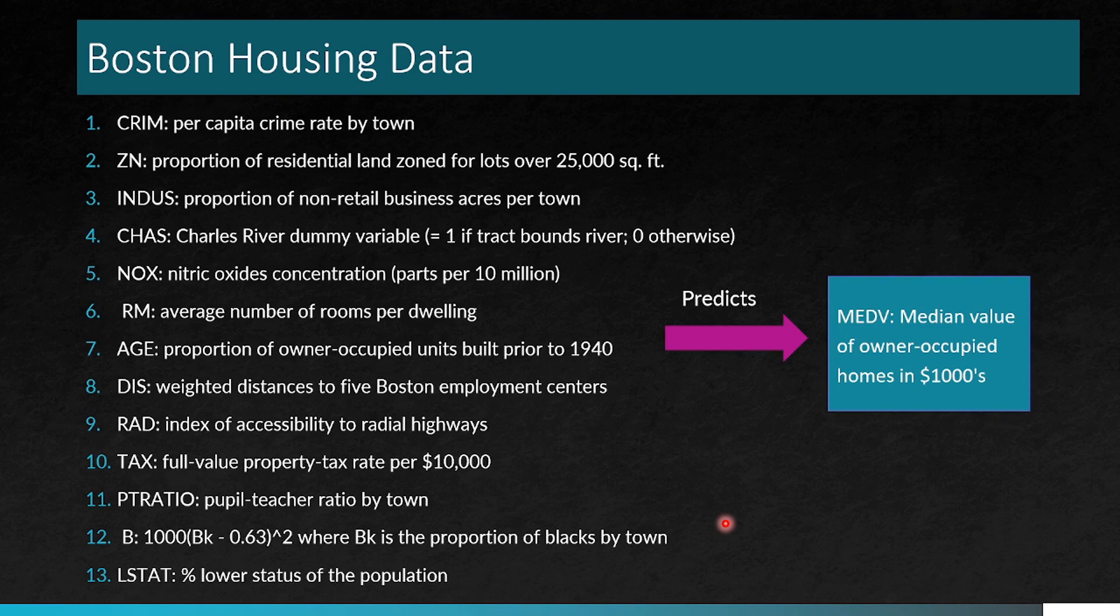Now we come to another fascinating example in which we consider the Boston housing data. It is the median value of owner-occupied homes in thousands. And these are the various factors, the 13 factors which are there, which you see are quite varied, like how close it is to the river, the number of rooms, the age of the houses, how far it is from the five Boston employment centers.